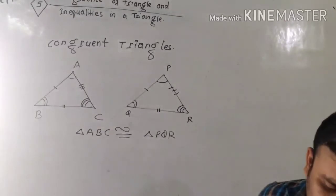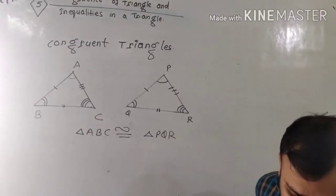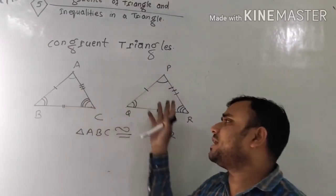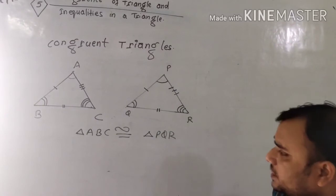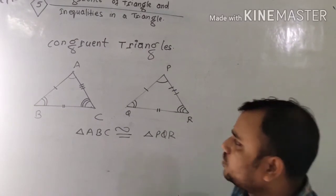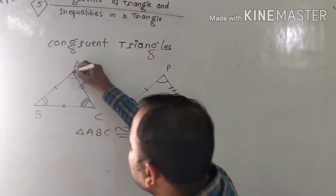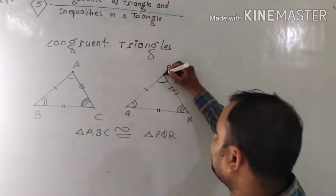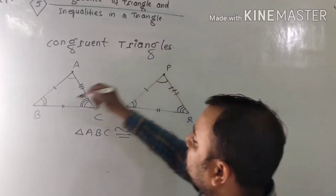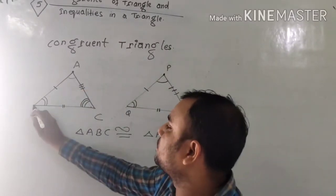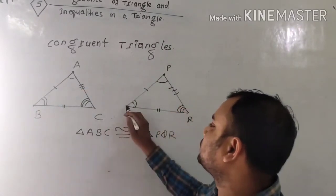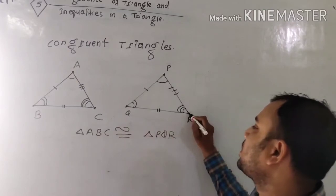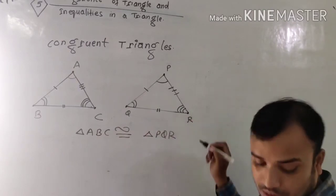Now dear students, let me explain corresponding sides, corresponding angles, and corresponding vertices. Vertex A is the corresponding vertex of P, B is the corresponding vertex of Q, and C is the corresponding vertex of R.